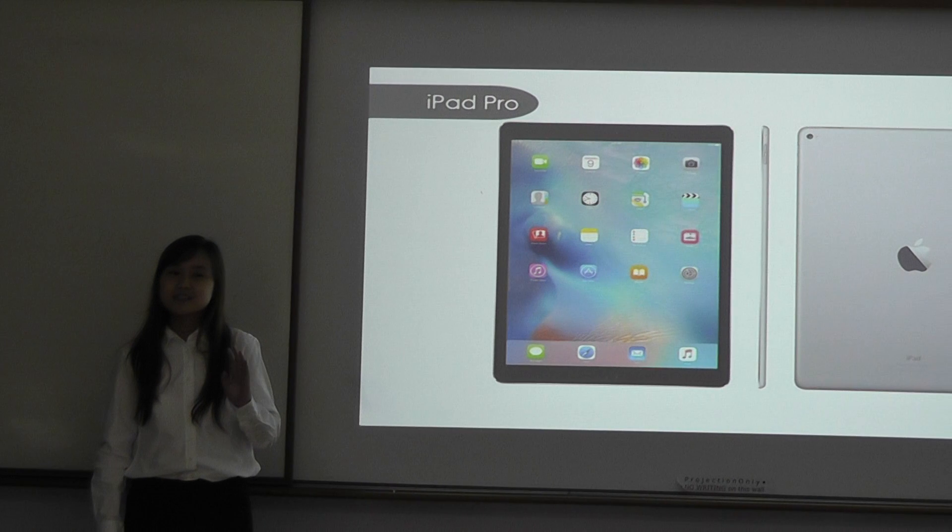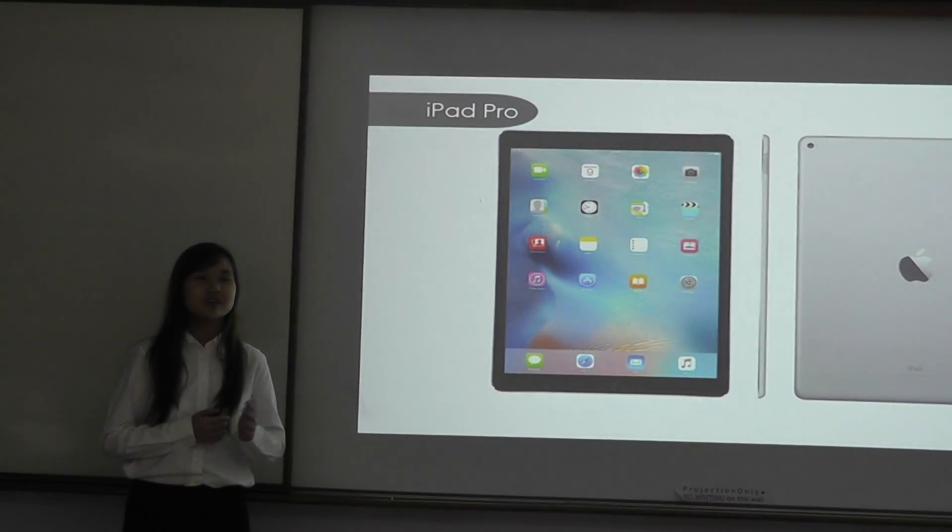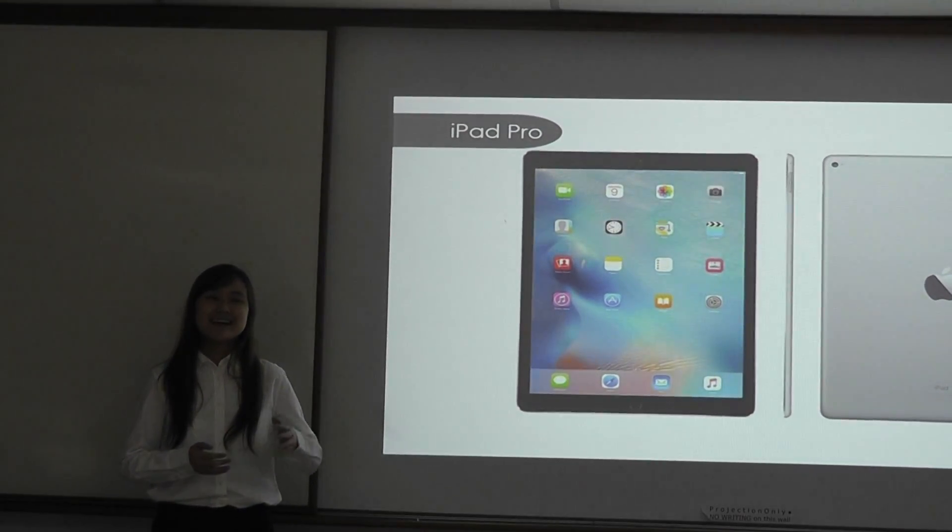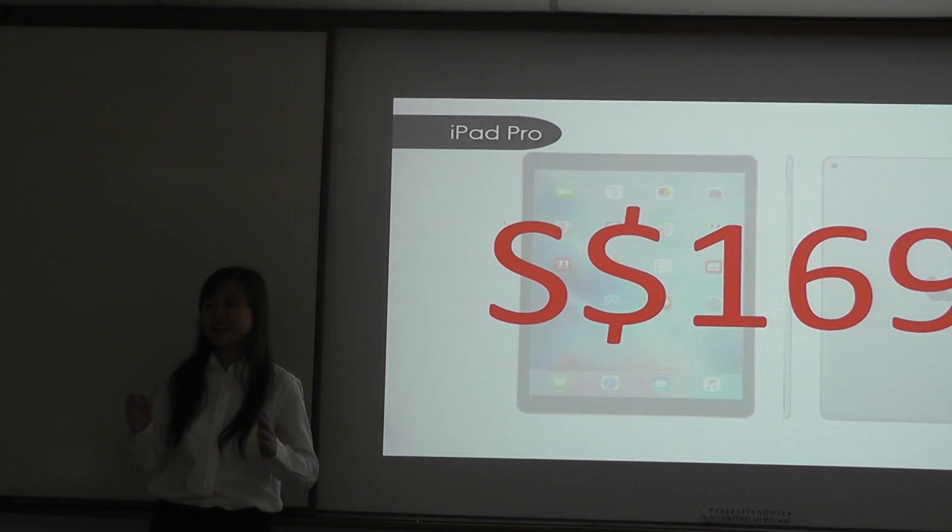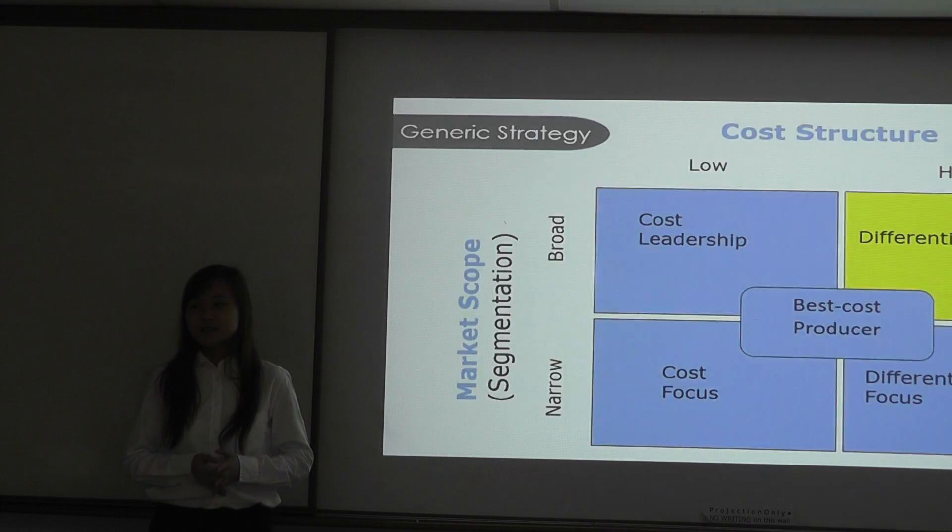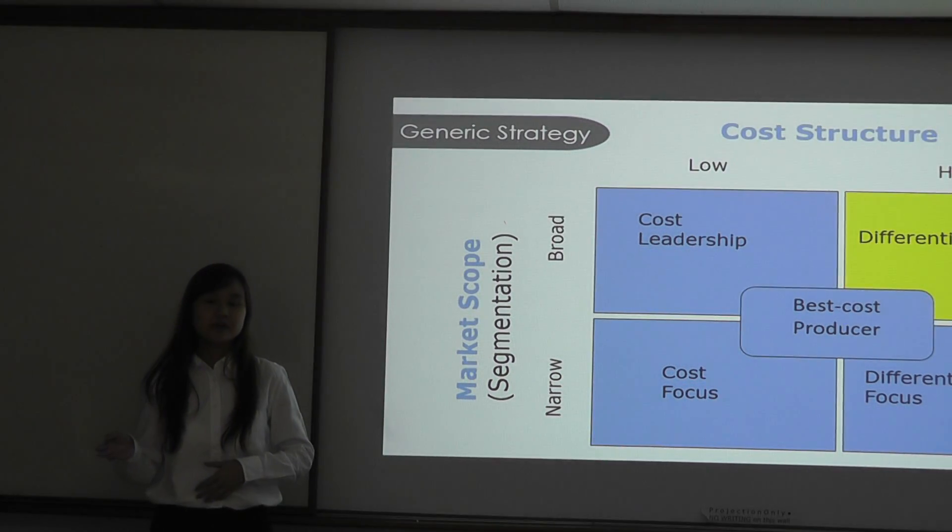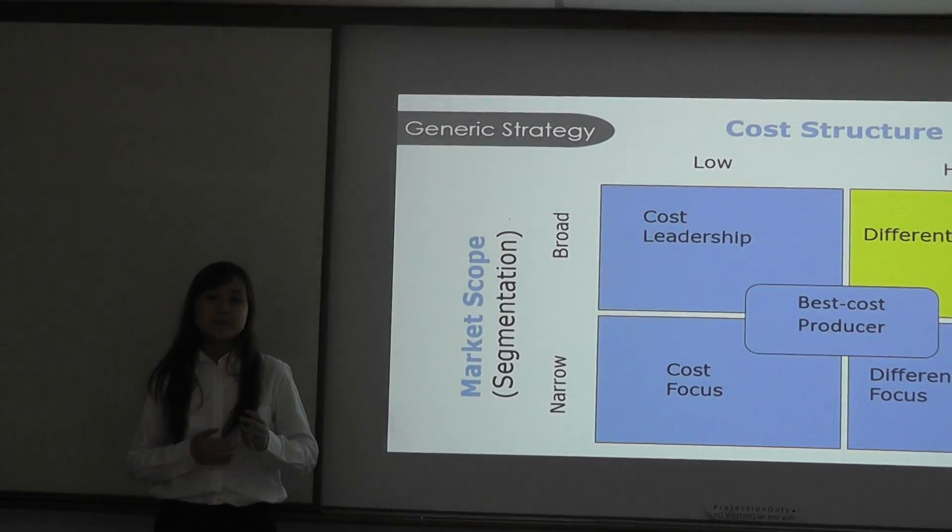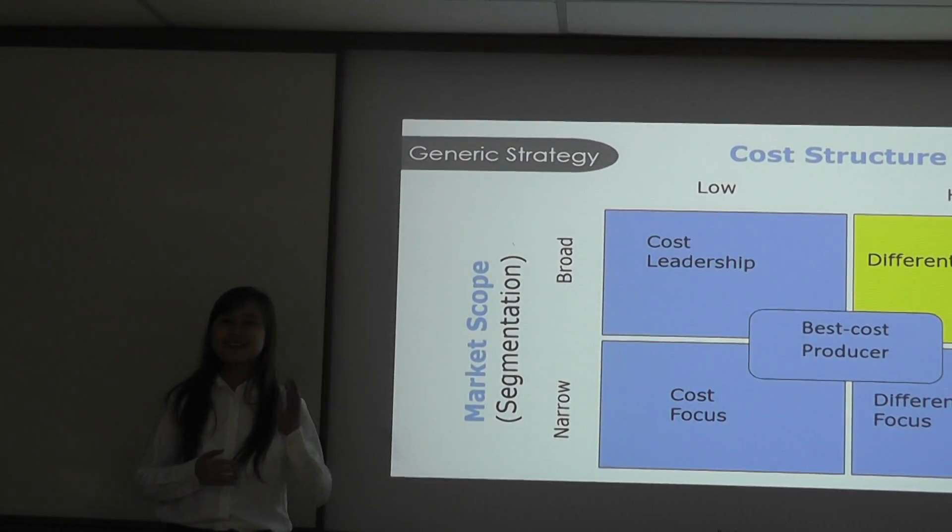And this is one of the latest models that was released in 2015. Do you all think that the price increased or did it drop? Drop. And you were wrong. $1,698. Throughout these years, from the first generation to the most latest model, the price of the iPad has increased. Therefore, Apple falls under the cost structure. The Apple cost structure is high.